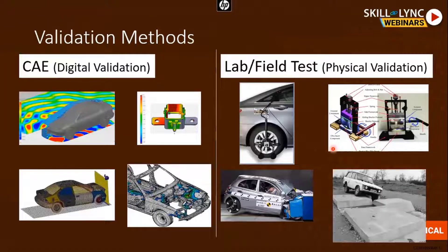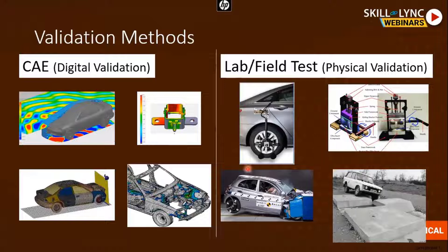Then it comes to the validation step. Once the design is made, it goes for validation. This validation can be done either virtually using CAE — specifically FEA, finite element analysis methods — or by physical validation. Physical validations are much costlier compared to digital validation, so digital validations are usually done in the beginning stages of design and development, and the final validation is done by the physical step.